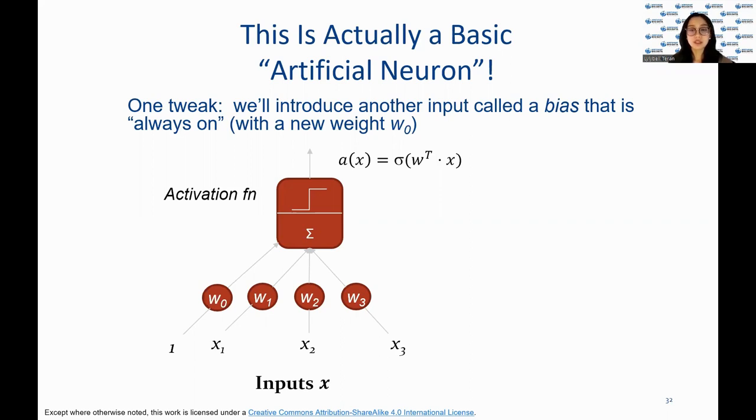The simplest version of the activation function is the sigmoid, which we already saw for logistic regression.